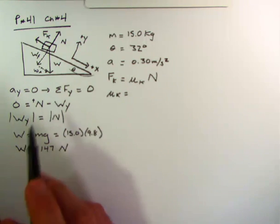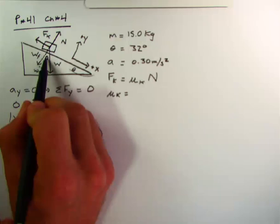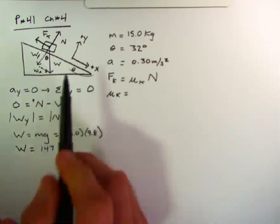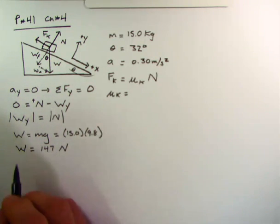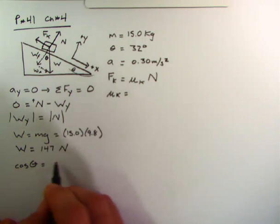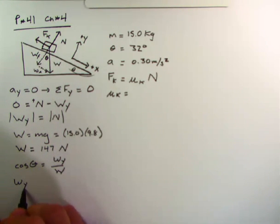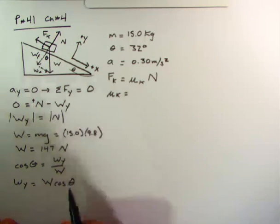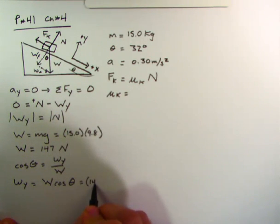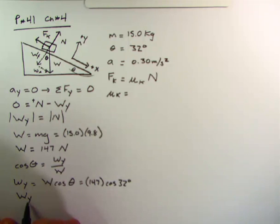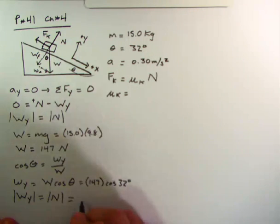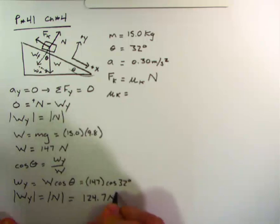I claim that this angle right in here is theta. And I know what theta is. It's 32 degrees. Therefore, I claim that the cosine of theta would be equal to w y over w. Therefore w y would be equal to w cosine theta, or in other words, 147 times the cosine of 32 degrees. In other words, w y, which is also my normal force in magnitude is equal to 124.7 newtons.